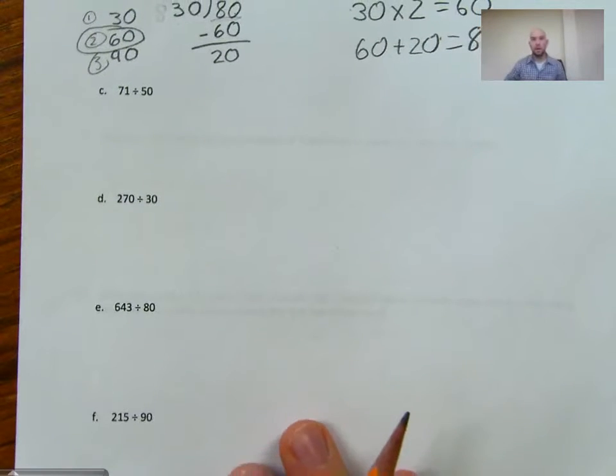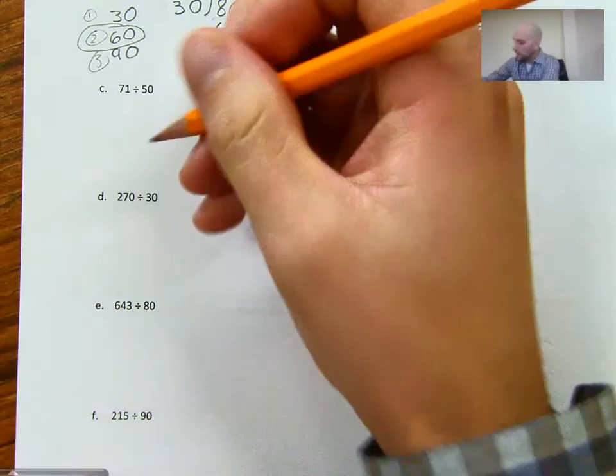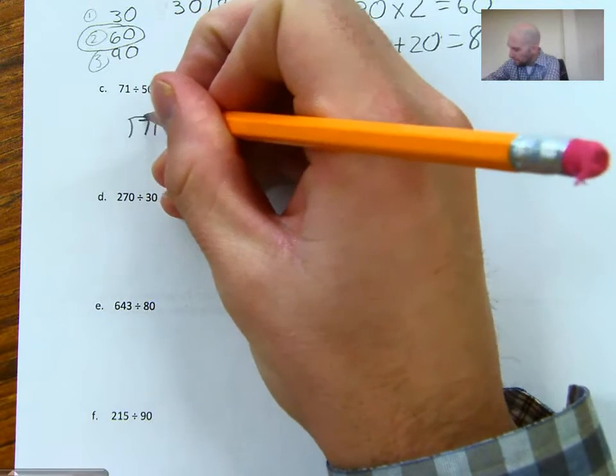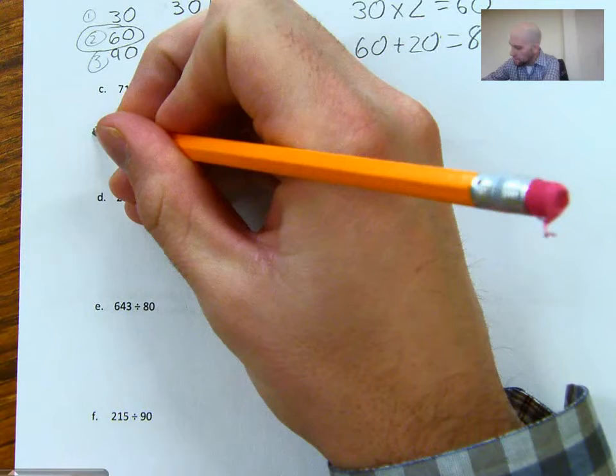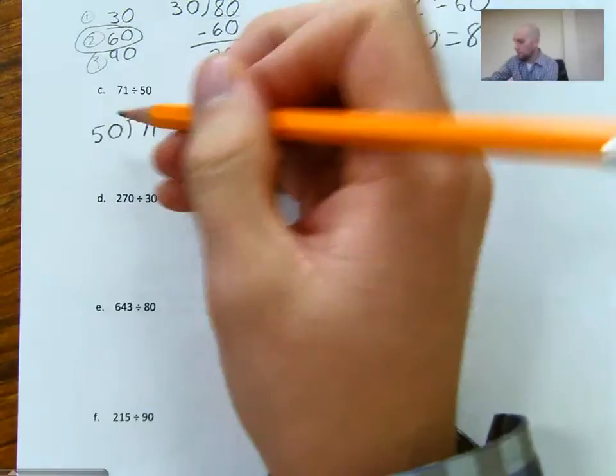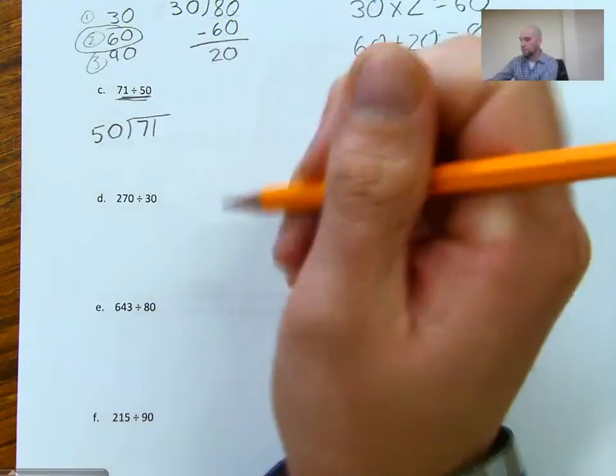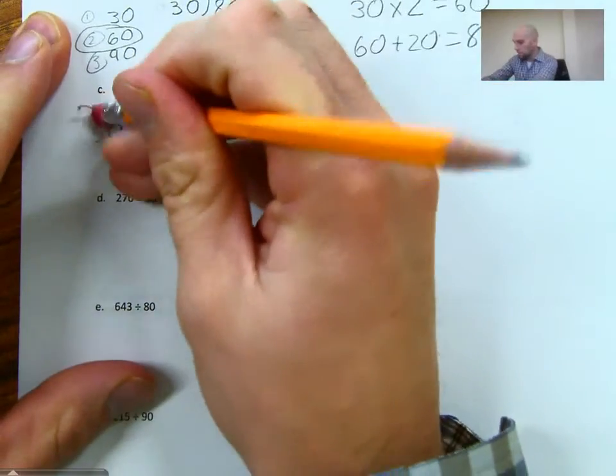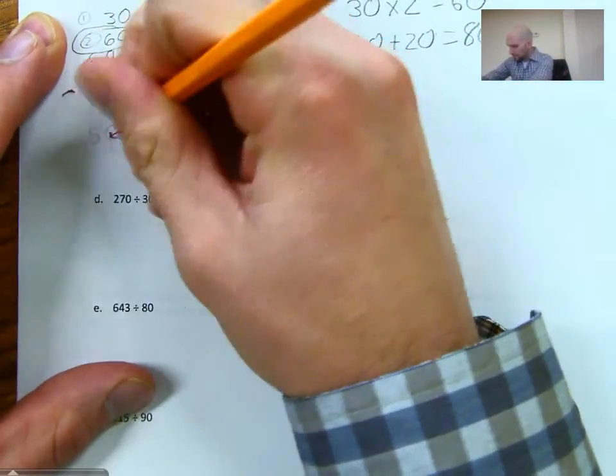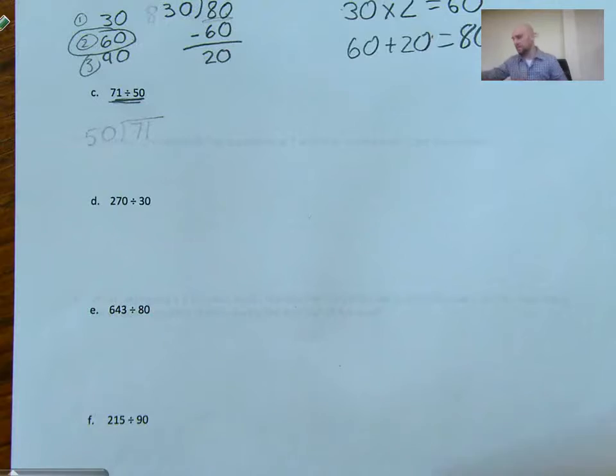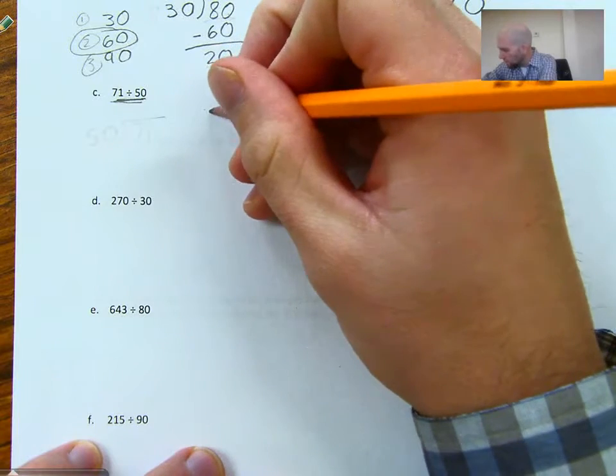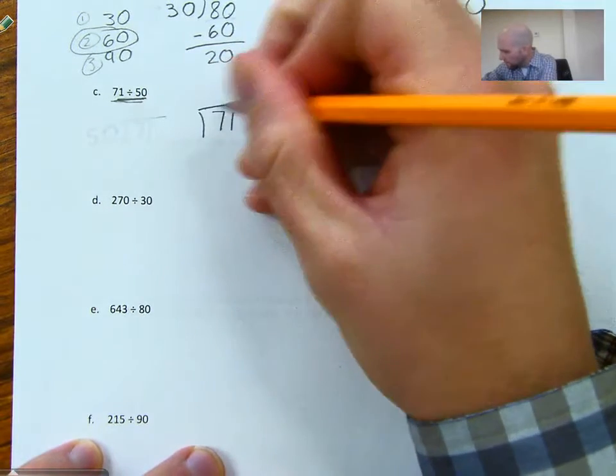So we're going to do a couple more just like that. We'll do letter C. 71 divided by 50. Again, remember, 71 is going to go inside and 50 goes outside. So we're just flipping those numbers. If we want to switch to like a long division type method or standard algorithm, we need to flip those around. I wrote this a little too far to the left. I want to give myself space for when I move down my paper. So I'm going to do 71 over here divided by 50.